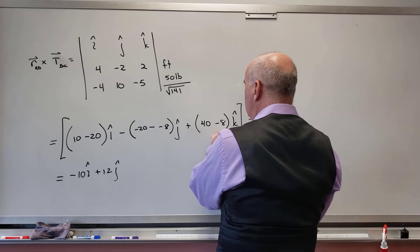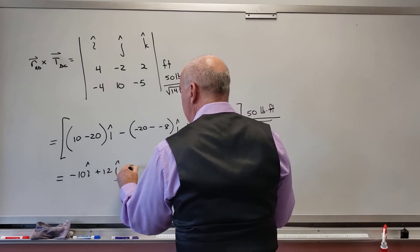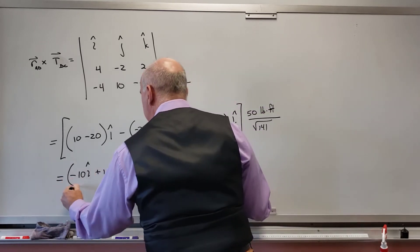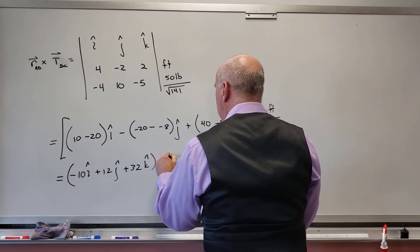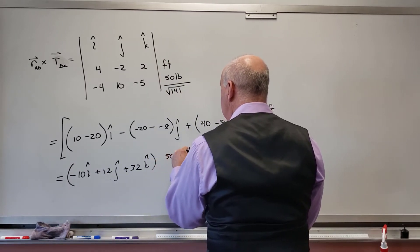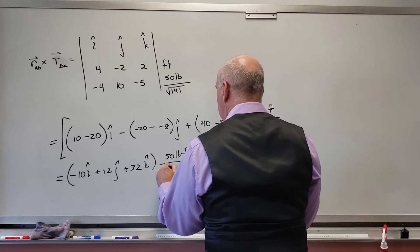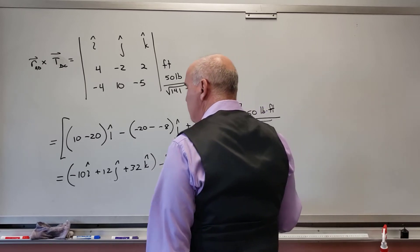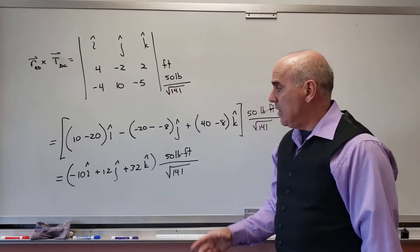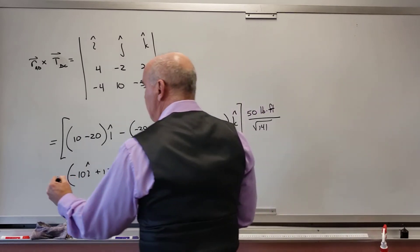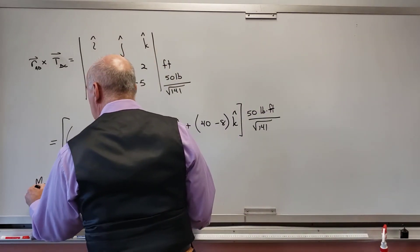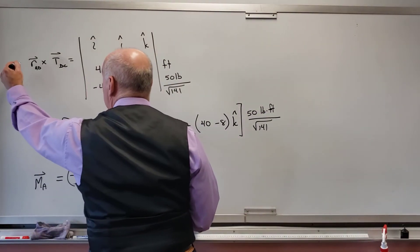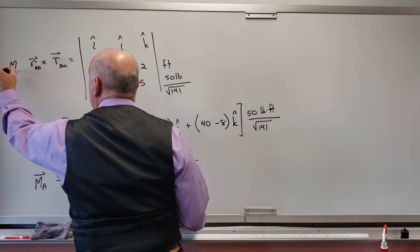And then 40 minus 8 is 32. So 32k. And then 50 pound-feet over radical 141. And there's my moment. This is the moment about A.